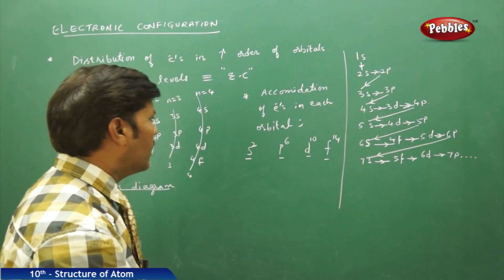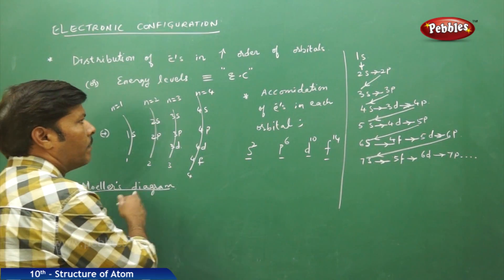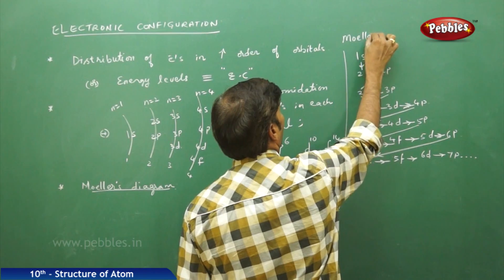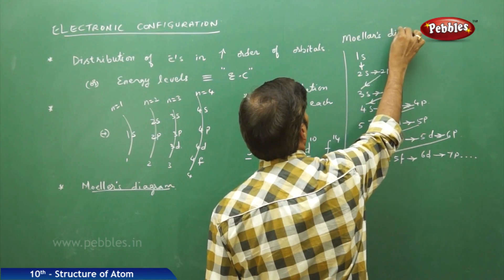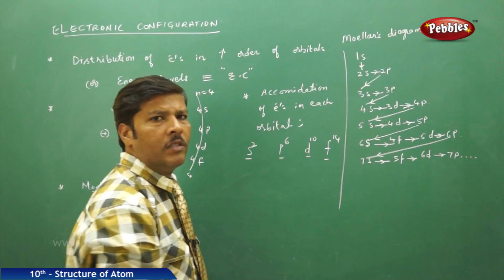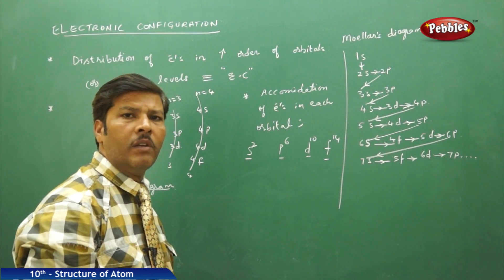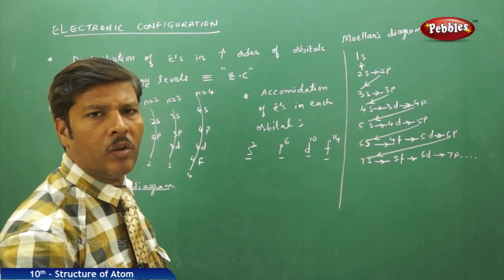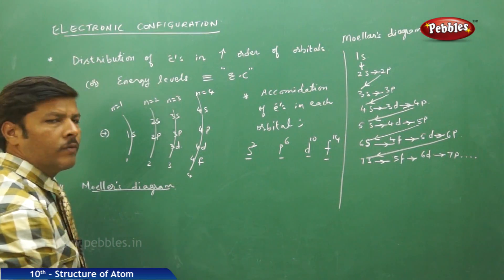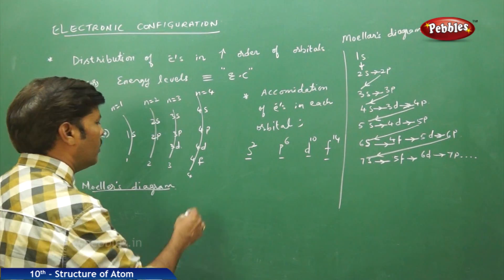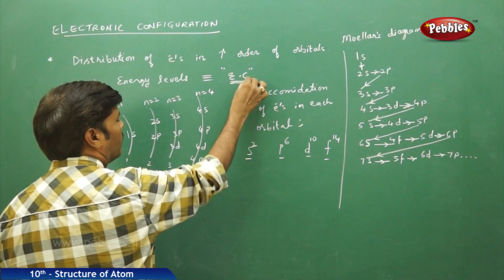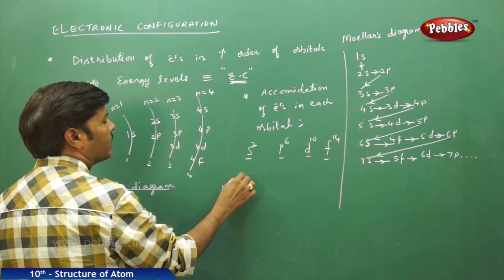Moller's diagram is very helpful in understanding the electronic configuration for various elements. But whenever you are writing the electronic configuration for multi-electron species, you should follow some set of rules. The first important method to follow is the NLX method.